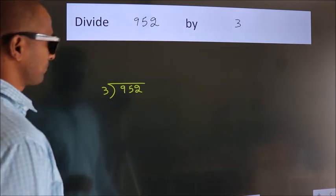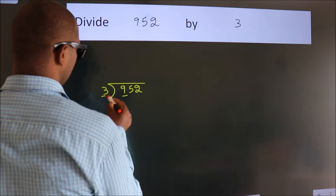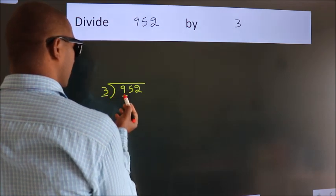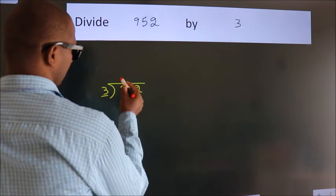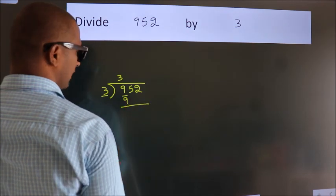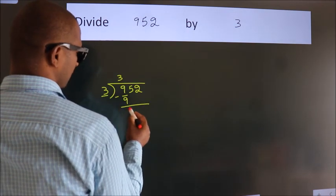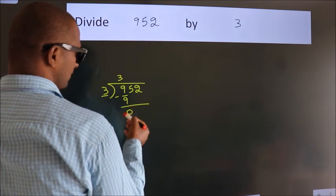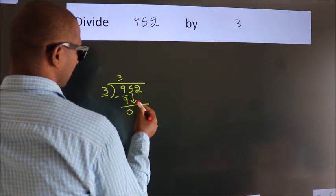Next. Here we have 9, here 3. When do we get 9? In 3 table, 3 3s is 9. Now, we should subtract. We get 0. After this, bring down the beside number.